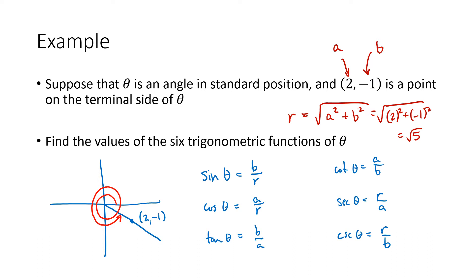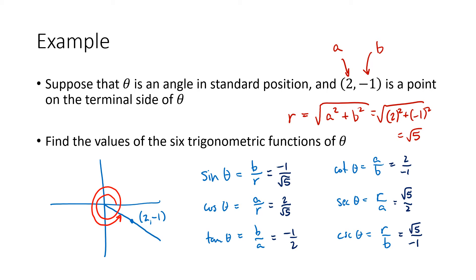That allows us to fill in the values. b over r is −1 divided by √5. a over r is 2 over √5. b over a is −1 divided by 2. a over b is 2 divided by −1. r over a is √5 divided by 2. And r over b is √5 divided by −1. Notice that for this angle, some of these trigonometric function values are negative — something that couldn't happen with acute angles, but now that we're applying the definition to any angle, trig values can be negative.